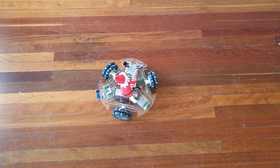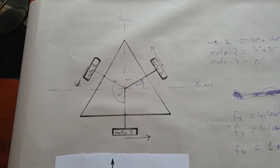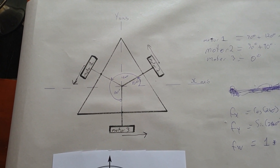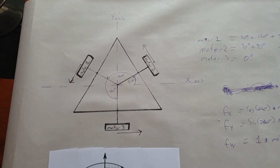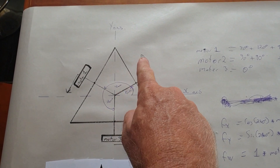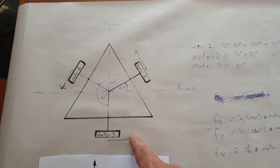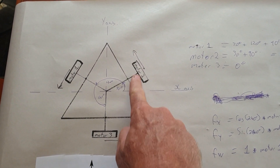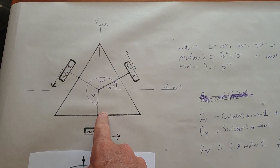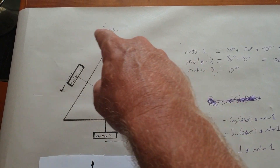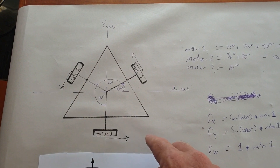How do we do that? This robot will move in the direction of the resultant forces — we add up all the forces and that tells us what it's going to do. So we want to find how much X component each motor makes, how much Y component each motor makes, and we call the rotation W — we need to know how much rotational force each one makes.